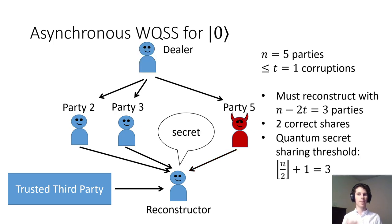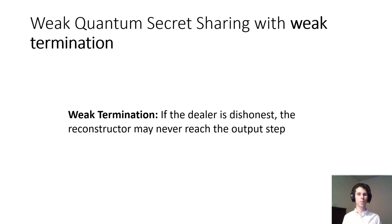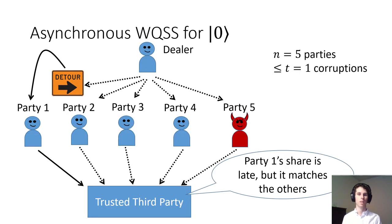To make matters worse, when the dealer is honest and the same situation occurs, reconstruction must always succeed for correctness. To deal with this, we introduce a new primitive called weak quantum secret sharing with weak termination. Weak termination allows the reconstructor to hang forever if the dealer is dishonest. It is worth noting that although we build verifiable quantum secret sharing from this primitive, our verifiable quantum secret sharing protocol will still have the normal termination property.